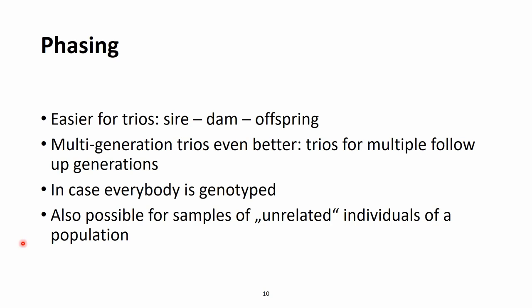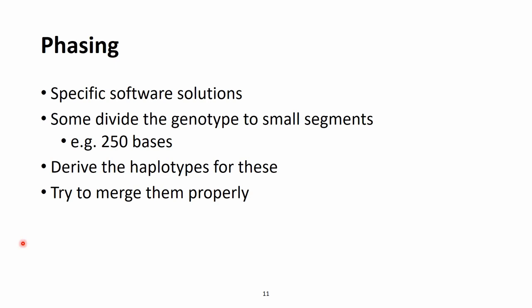In reality however we don't always have this ideal situation. Many times only parts of the population are genotyped, so it is harder to work out the actual haplotypes. Fortunately this is also possible and haplotypes could be determined for samples of unrelated individuals within a population — 'unrelated' in quotation marks because there is usually some kind of relationship between individuals within a population. Specific software solutions divide the genotypes into smaller segments, derive haplotypes from these smaller segments, and merge them back properly.